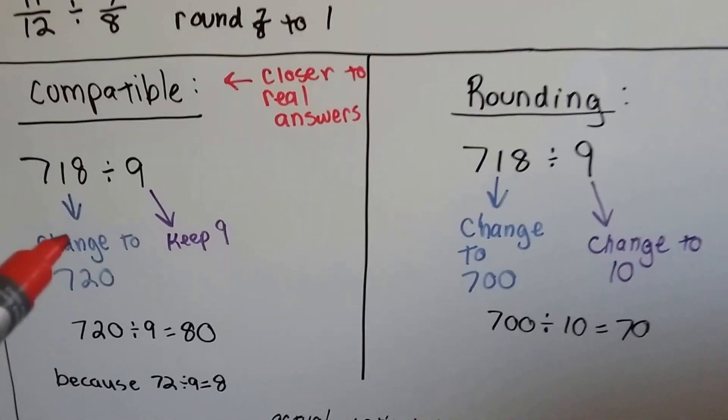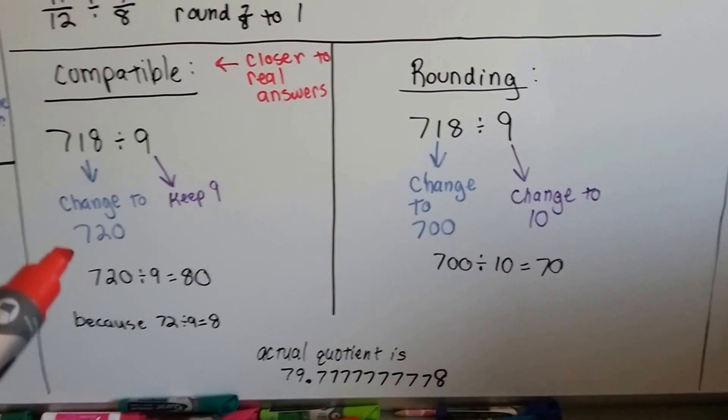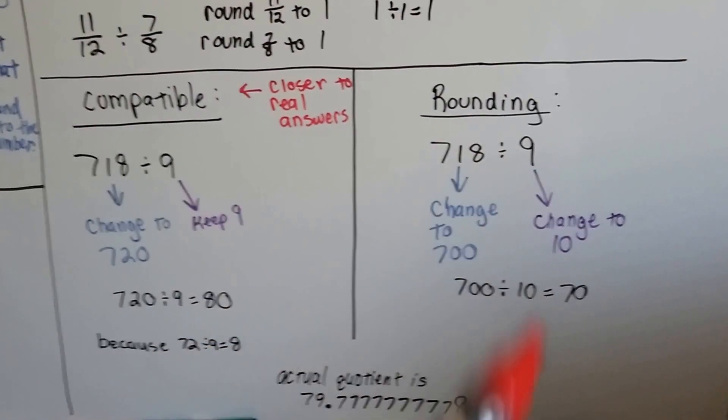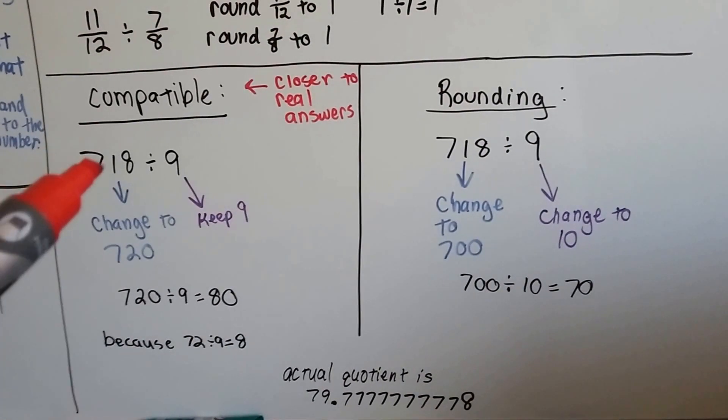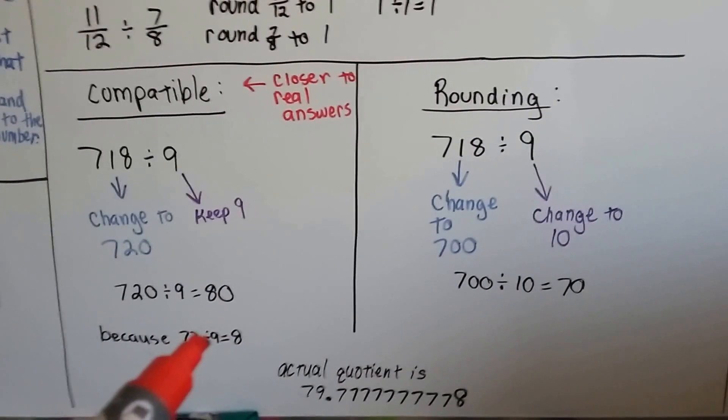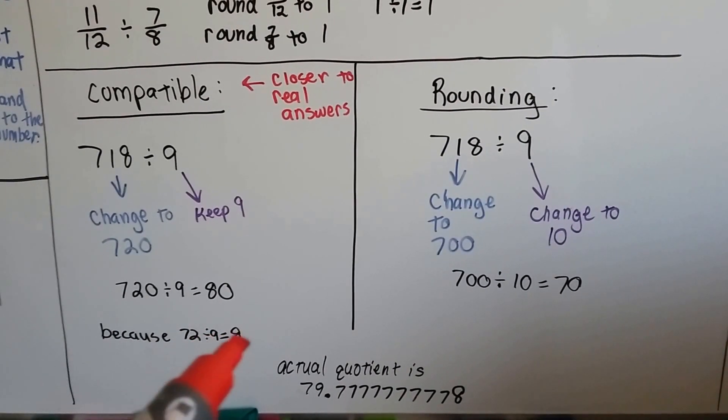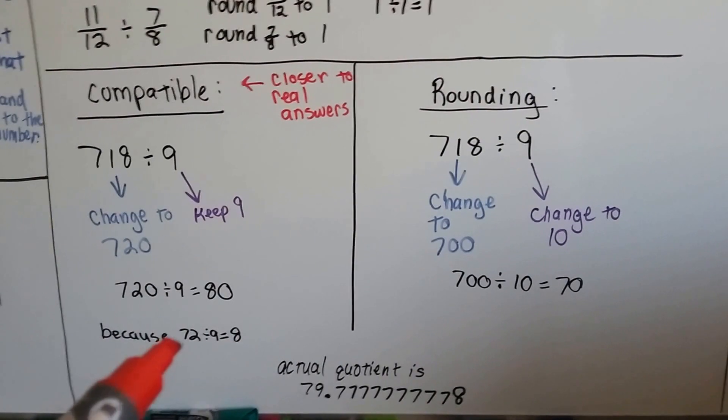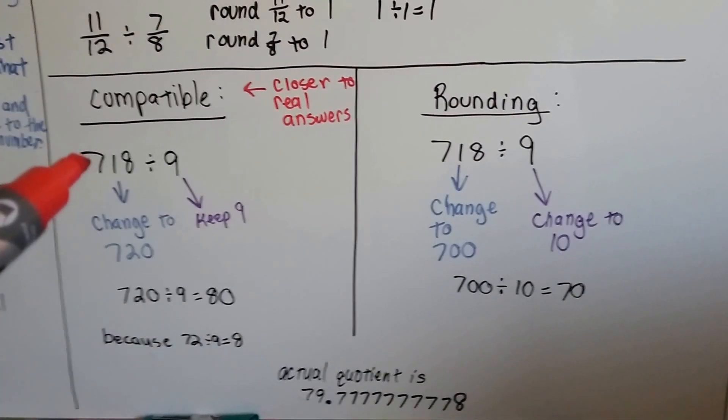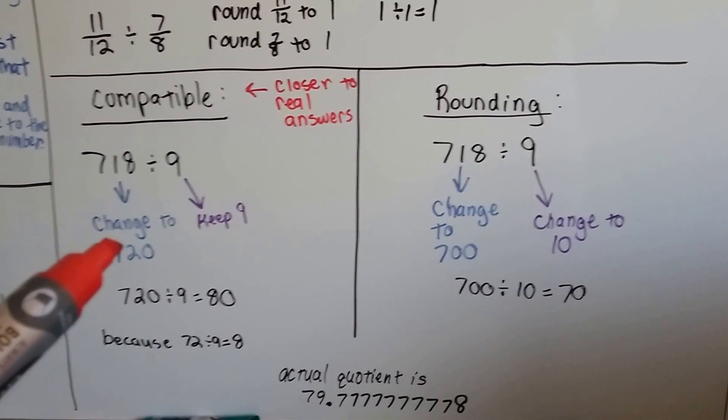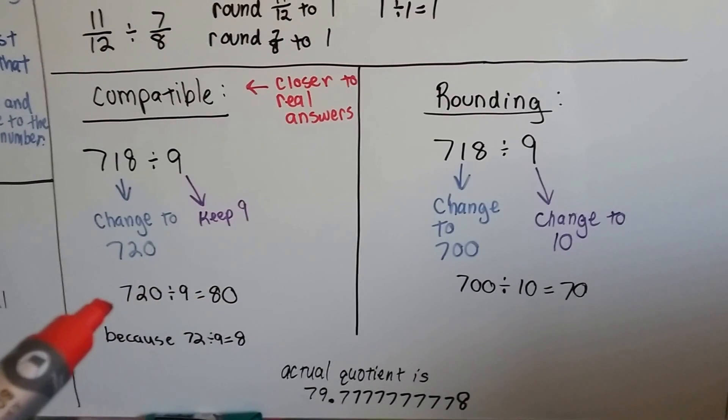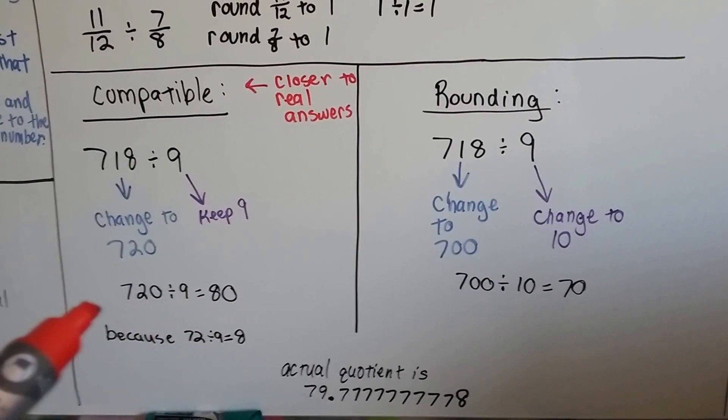So here's the difference between compatible and rounding in a nutshell. This is closer to the real answers, and this is farther from the real answers. If we have seven hundred and eighteen divided by nine, we know that seventy-two divided by nine is eight because it's part of the eight and nine times table. So we can just add a zero onto that seventy-two and make it seven twenty. So the seven eighteen becomes a seven twenty, and we keep the nine, and then our estimated answer is eighty because they're all part of like a fact family.